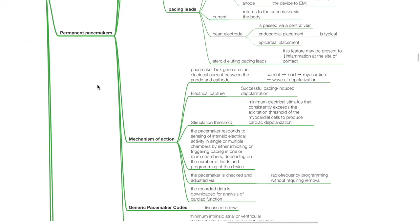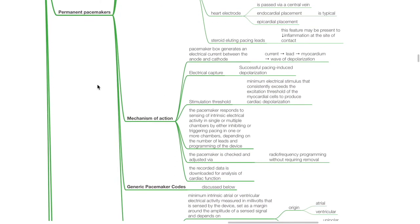Mechanism of action: the pacemaker box generates an electrical current between the anode and the cathode. Current travels via the lead to reach the myocardium and initiates a wave of depolarization and contraction. Electrical capture refers to successful pacing-induced depolarization. Stimulation threshold refers to the minimum electrical stimulus that consistently exceeds the excitation threshold of the myocardial cells to produce cardiac depolarization. The pacemaker responds to sensing of intrinsic electrical activity by either inhibiting or triggering pacing depending on the programming of the device. The pacemaker is checked and adjusted via radiofrequency programming without requiring removal.